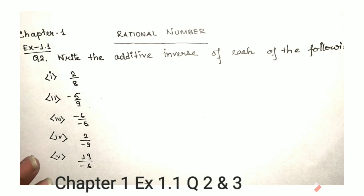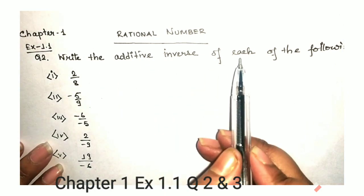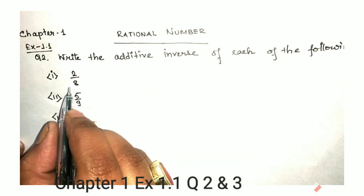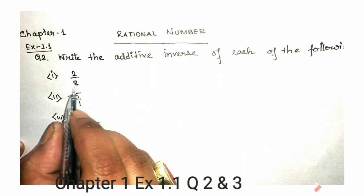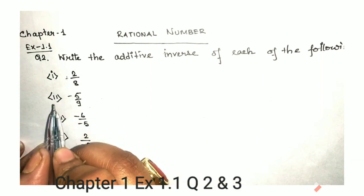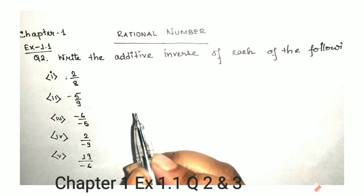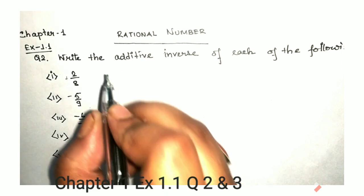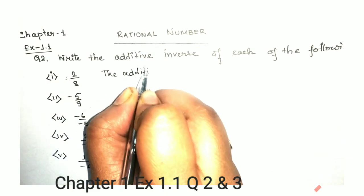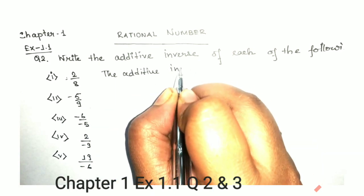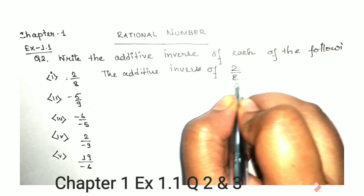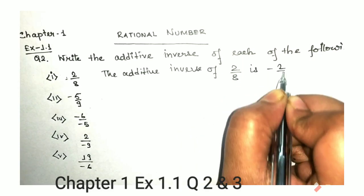In this question we have: write the additive inverse of each of the following. Now, the additive inverse — whatever number is given, we will just change the sign. Here a plus sign is given in front, that means if we change the sign it will be minus. So the additive inverse of 2 by 8 is minus 2 by 8.